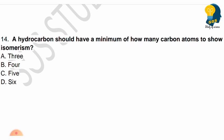Next question: A hydrocarbon should have a minimum of how many carbon atoms to show isomerism? To form isomers, a minimum number of carbon atoms are needed. Options are 3, 4, 5, or 6 carbon atoms. If they are asking for the minimum, identify the correct number.